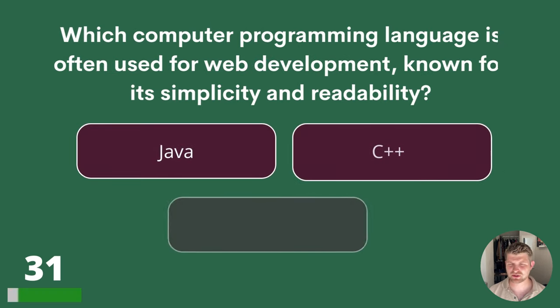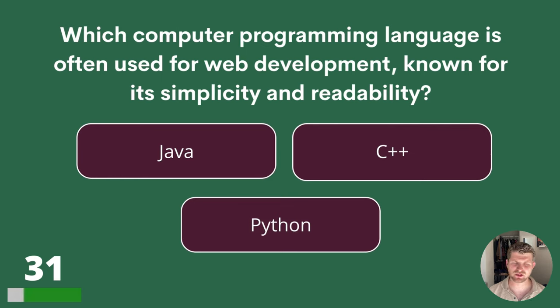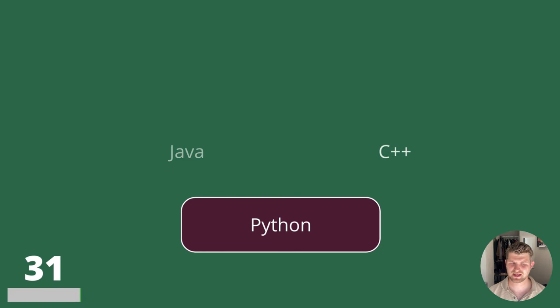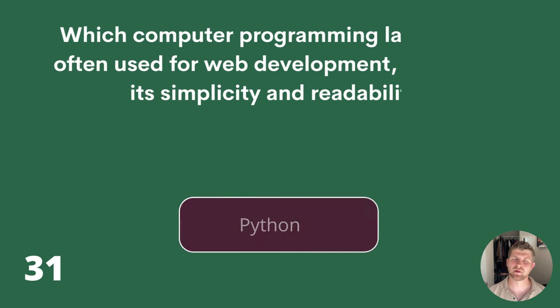Question 31. Which computer programming language is often used for web development, known for its simplicity and readability? Java, C++ or Python? The answer is Python.